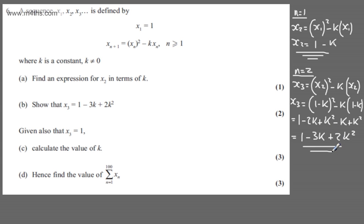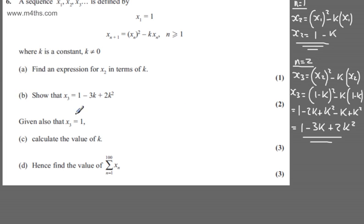So all I've done is substituted n = 2 and used our value from the last part of the question to show that x₃ = 1 - 3k + 2k².